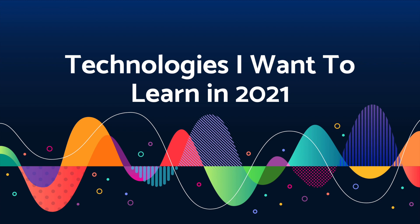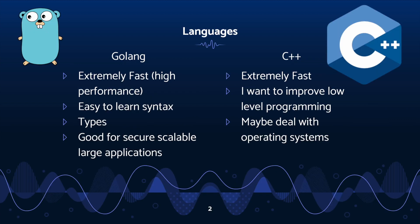Let's get started with the languages I'm planning to learn. Most languages share common concepts, so you don't need to learn every single one — for example, JavaScript covers many aspects of web development. For that reason, I'm focusing on just two languages this year: Golang and C++.